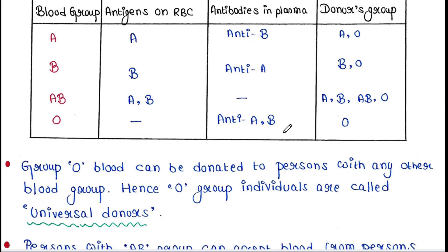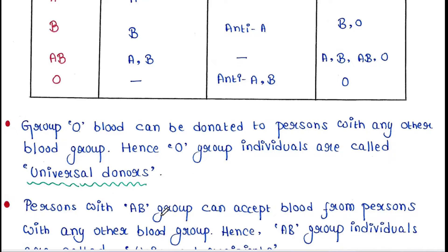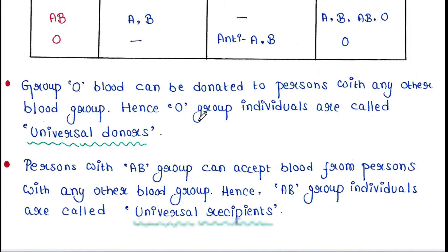From this chart, we can conclude that group O blood can be donated to persons with any other blood group. Hence, O group individuals are called universal donors. And persons with AB blood group can accept blood from persons with any other blood group. Hence, AB group individuals are called universal recipients. This is all about today's lecture. I hope you liked the lecture. Thank you for watching my video.